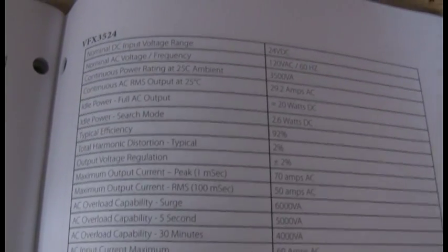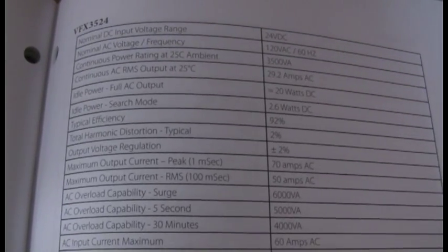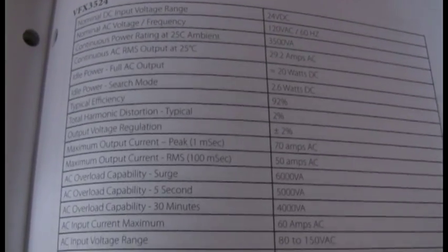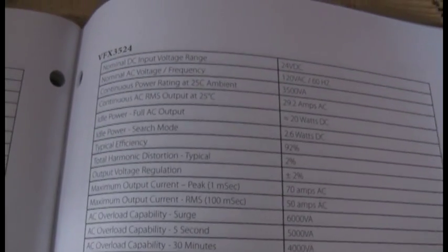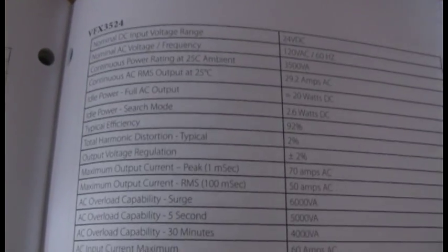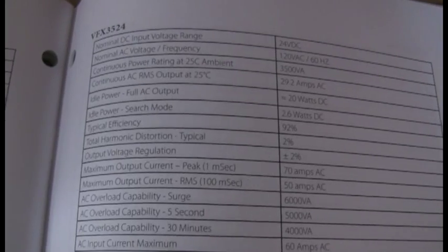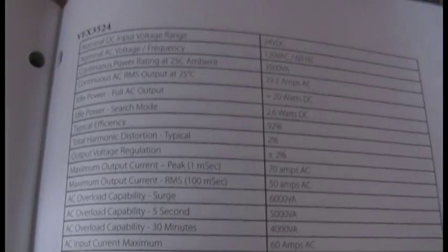When it goes into search mode, power cuts by a factor of 10 roughly. That's important because you don't want to pull off your batteries any more than you have to. This is a very important spec: typical efficiency 92%.